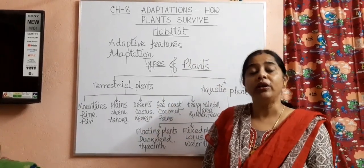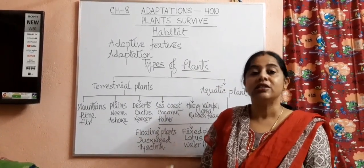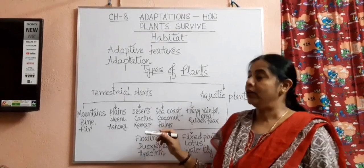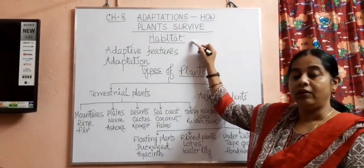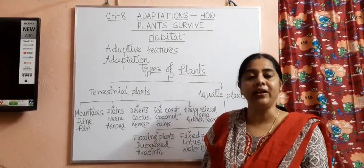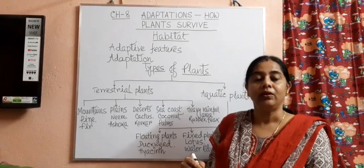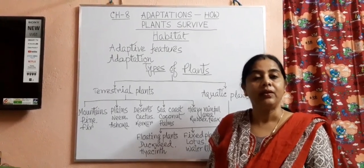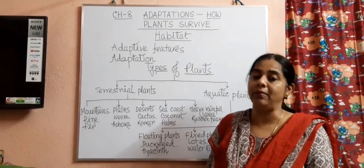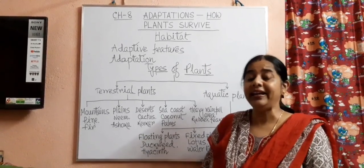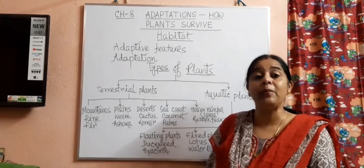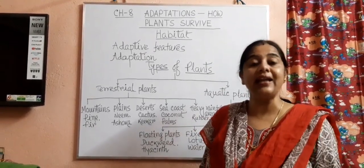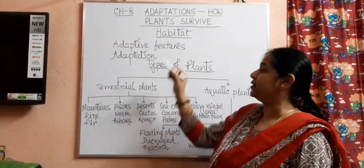Before going to the chapter, I want to discuss some important things related to this chapter. The first one is Habitat. What is Habitat? The surrounding where a living thing lives and survives is known as its habitat. A living body — whether plant or animal — in a particular place where it lives, grows, reproduces, performs all biological activities, and dies, is known as its habitat.